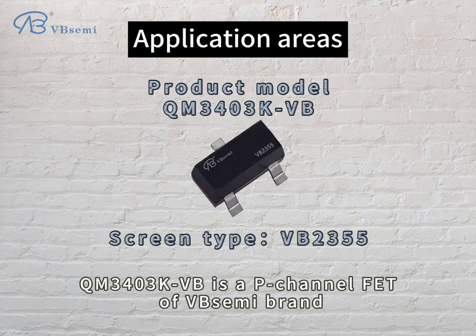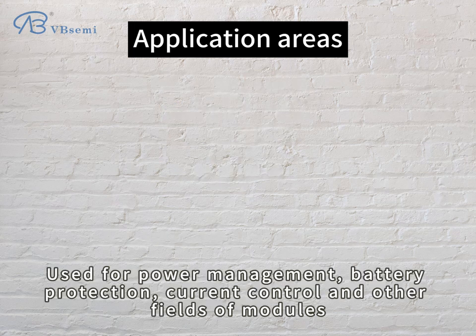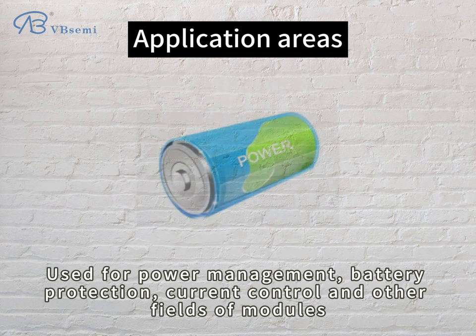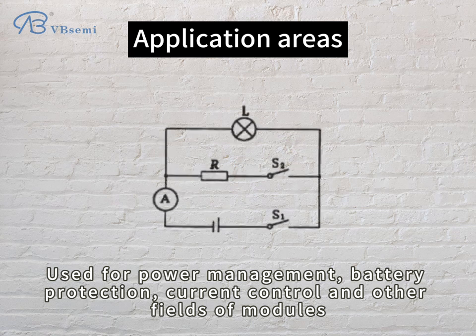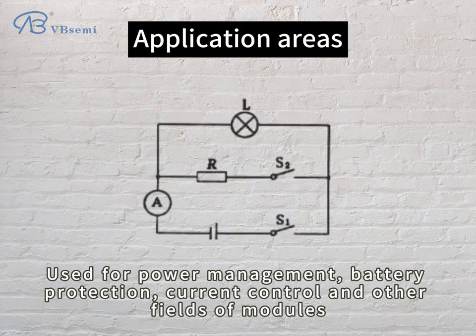QM303 KVB is a P-Channel MOSFET of the VB Semi brand, used for power management, battery protection, current control, and other module applications.